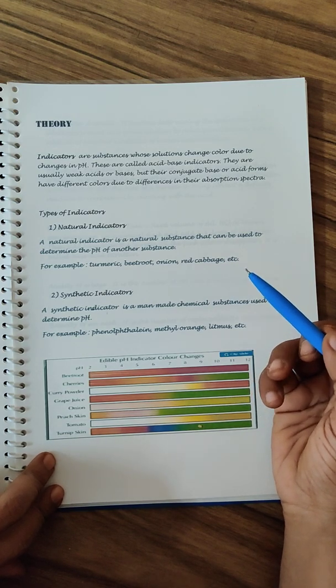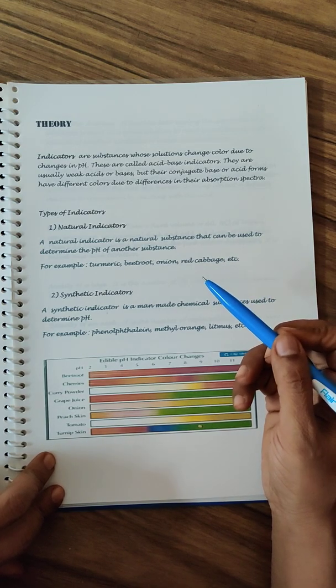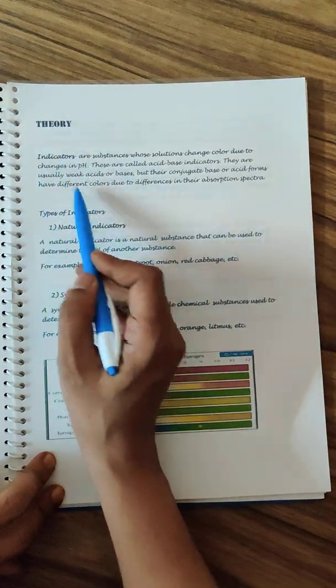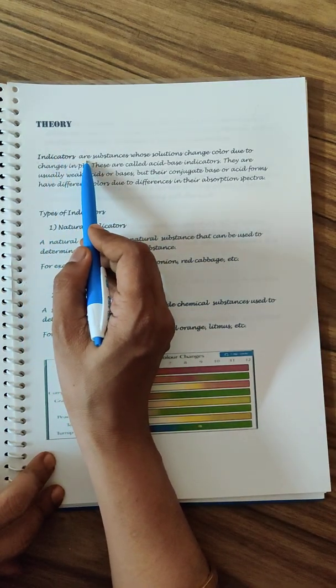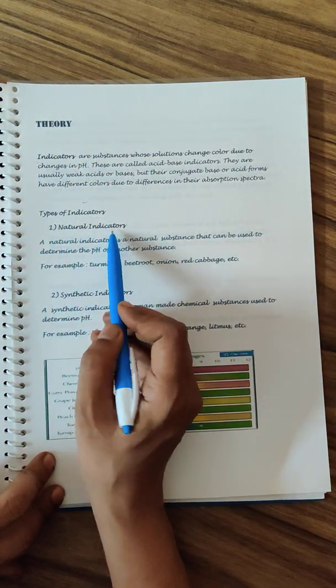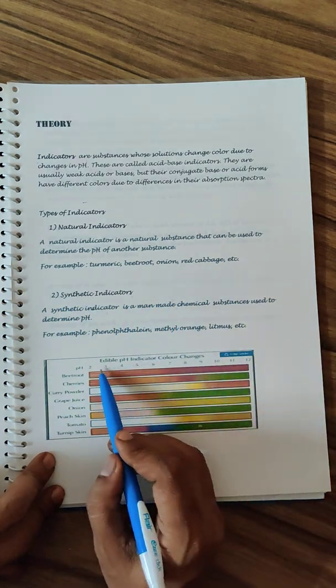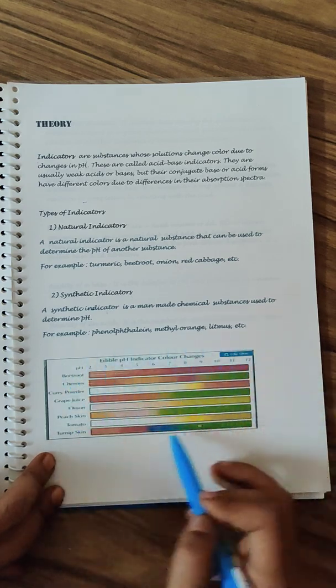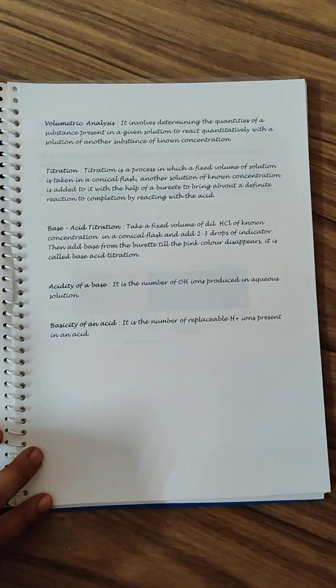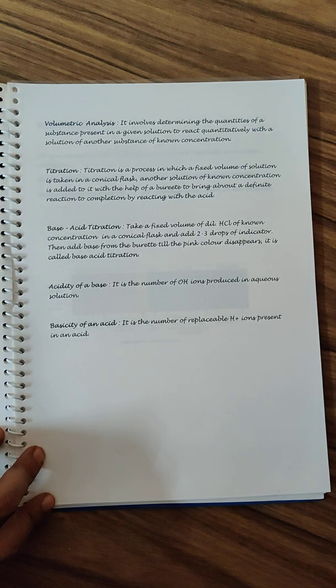Now we move on to the theory section. Theory section can be looked up from the NCERT reference books, Google, wherever you can get, but please put only the matter which you understand. The student has given detail about what are indicators, the types of indicators can be natural as well as synthetic.